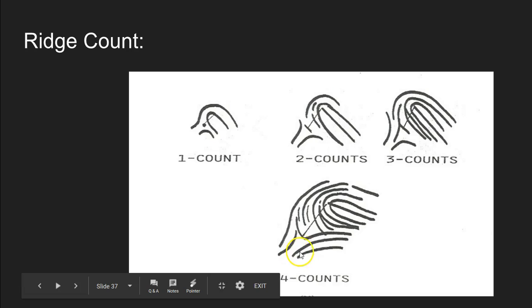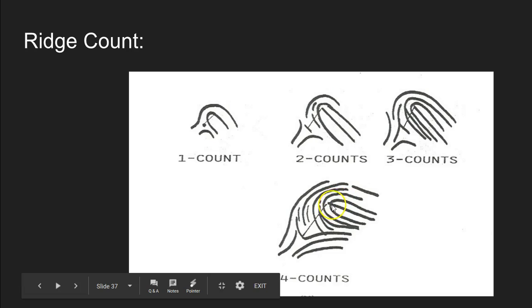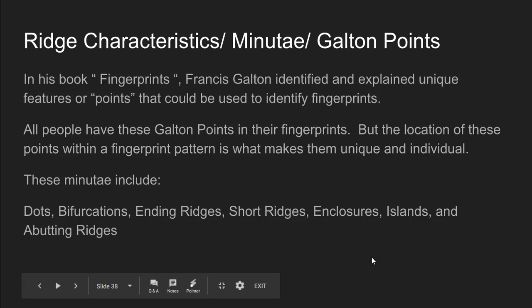Looking at this bottom one, here is our type line, our type line, and our delta. We can see our innermost recurve — notice that this recurve is spoiled, so our innermost recurve is actually the next one. We have a spike in the middle of that, so our core actually goes on the spike. If we draw an imaginary line between our delta and the core and count, it crosses one, two, three, four ridges — we don't include the core or the delta — so this fingerprint has a ridge count of four. These ridge counts are important not only as a characteristic for a loop but also for the Henry system classification later in the semester.